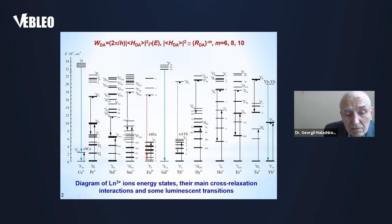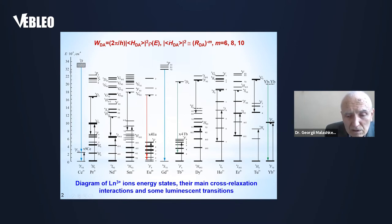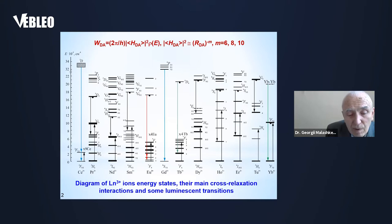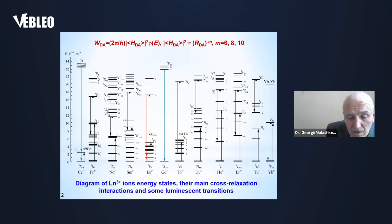As is known, within the weak coupling approximation, the probability of ion-ion transfer of excitations is determined by this formula, where the matrix elements of the interaction Hamiltonian for the electrostatic multipole interaction are characterized by inverse power dependence on the square of the distance between donor and acceptor of excitations. Therefore, the search for matrices that provide a large minimal distance between the donor and acceptor of excitations is relevant.